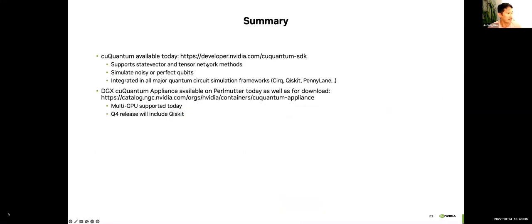In summary, KuQuantum is available today. We support state vector and tensor network methods. We can simulate noisy or perfect qubits and we're integrated in all major quantum circuit simulation frameworks. The DGX KuQuantum appliance is available on Perlmutter today and for download. Multi-GPU is supported today and in our quarter four release, we'll include Qiskit and multi-node. I'd like to stop there and take any questions and hopefully we can get this tutorial on.